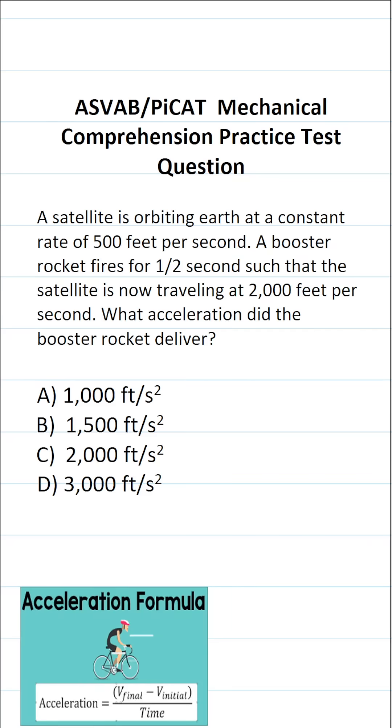This mechanical comprehension practice test question for the ASVAB and PICAT says, a satellite is orbiting Earth at a constant rate of 500 feet per second. A booster rocket fires for half a second, such that the satellite is now traveling at 2,000 feet per second. What acceleration did the booster rocket deliver?